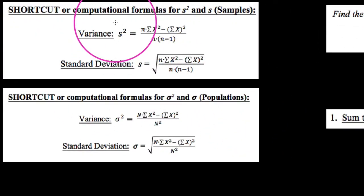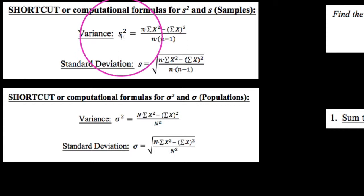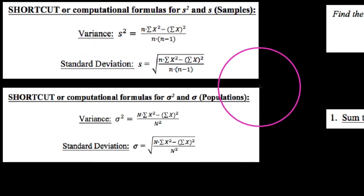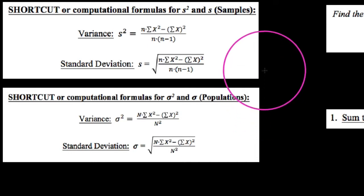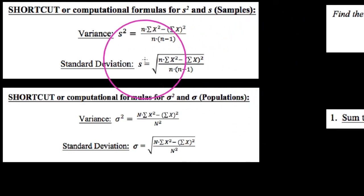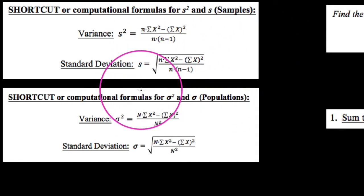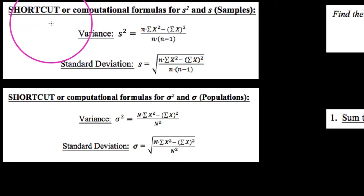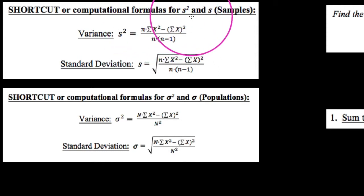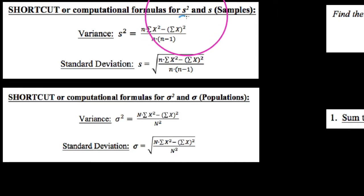In this video, we're going to run through how to use a shortcut formula to find the variance and standard deviation for a given sample of data or even a population of data. The first thing we're going to do is talk about the difference between the two formulas. You'll notice I give two shortcut formulas — this first set here shows the computational formulas for S squared and S, which are for samples, using Roman letters.